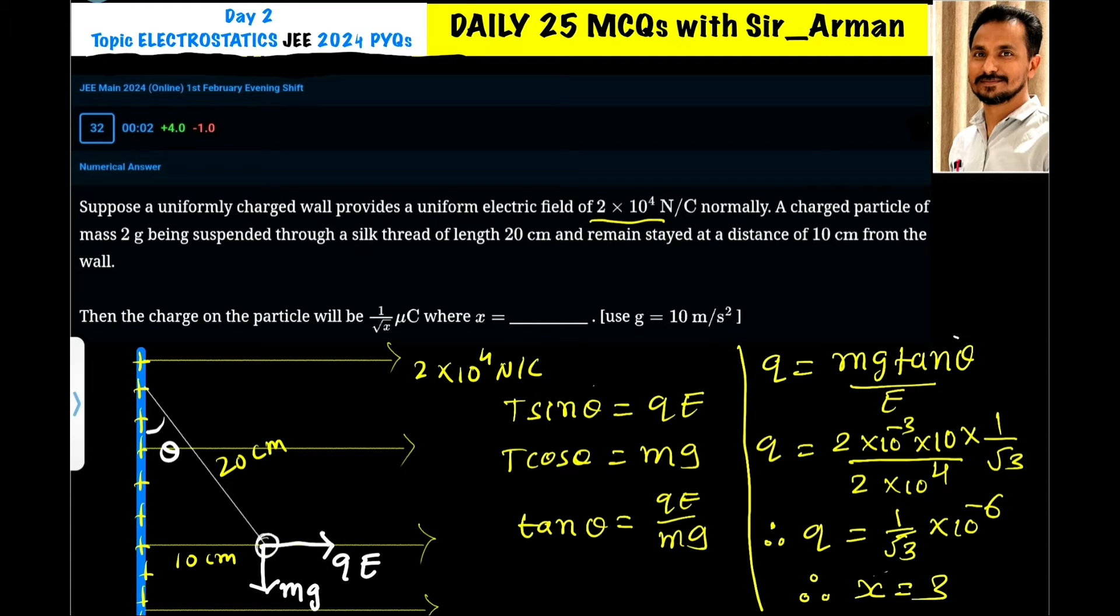The electrostatic force acting on the charge is qE and the gravitational force is pulling downward. These two forces are balanced by the tension. The components of the tension T here become T cos θ and T sin θ, where T sin θ is balanced by qE and T cos θ is balanced by mg.